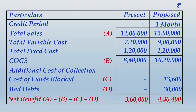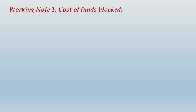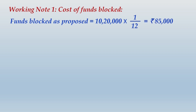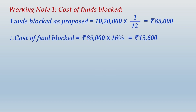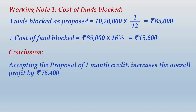Since profit increases by rupees 76,400 under the proposed policy, the proposed policy is worth implementing. Working Note 1 — Cost of Funds Blocked: Funds blocked under proposed policy = 1/12 of rupees 10,20,000 = rupees 85,000. Cost of funds blocked = 16 percent of rupees 85,000 = rupees 13,600. Conclusion: Accepting the proposal of 1 month credit increases overall profit by rupees 76,400; the proposal is therefore worth accepting.